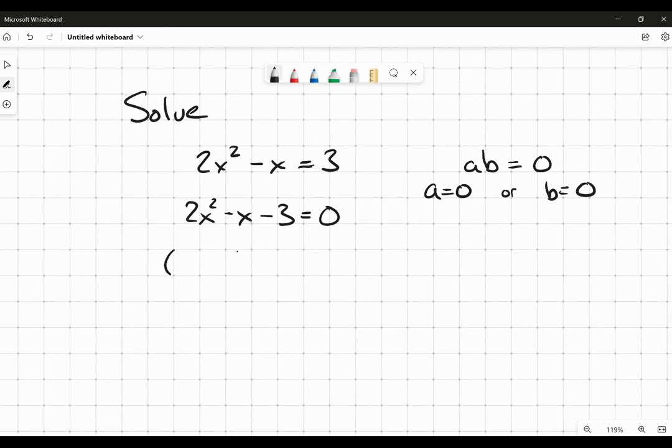So I bring every term over, set it equal to 0, and now I'm going to factor if I can. And in this case here, I know that my first two terms must look like this. It's got to be 2x and then multiplied by x. So that when I multiply those together, I get that 2x squared.